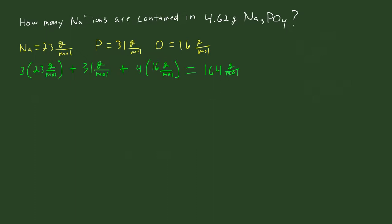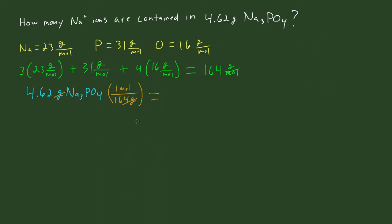This means that if I had 164 grams of this, I have exactly one mole of trisodium phosphate. So now let's convert the number of grams into the number of moles. We have 4.62 grams of trisodium phosphate, and we know for one mole of trisodium phosphate there is 164 grams. The grams cancel out and we're left with moles, so we get 4.62 divided by 164 = 0.028 moles of trisodium phosphate.